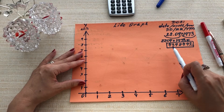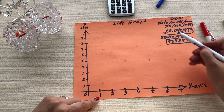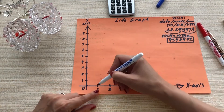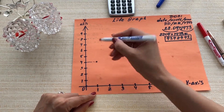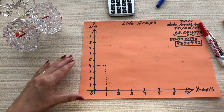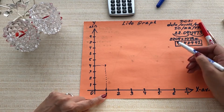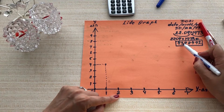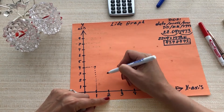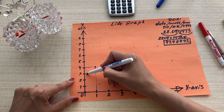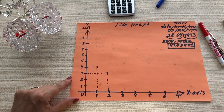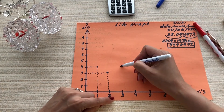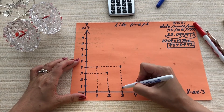Now we're ready to create the graph. The first digit is 4. Find 4 on the y-axis. Let's use a dotted line so it will be more visible. This is the first number, first digit: 4. The second digit is 3 — find 3, it's going to be right here. And the third digit — 1, 2, 3 — it's 4 again.